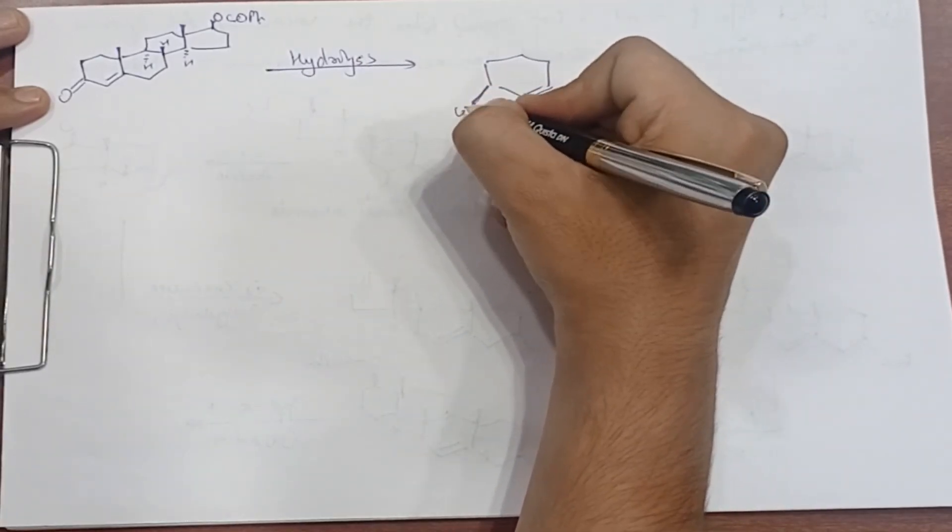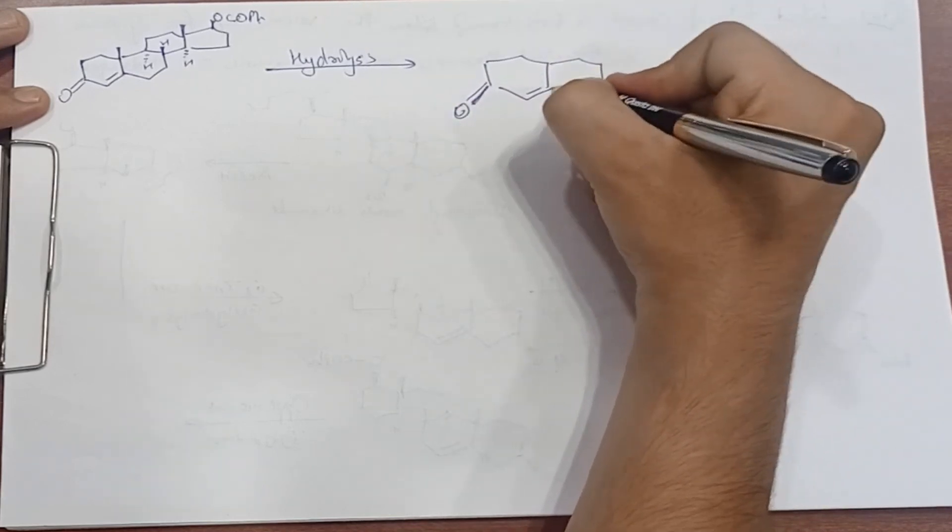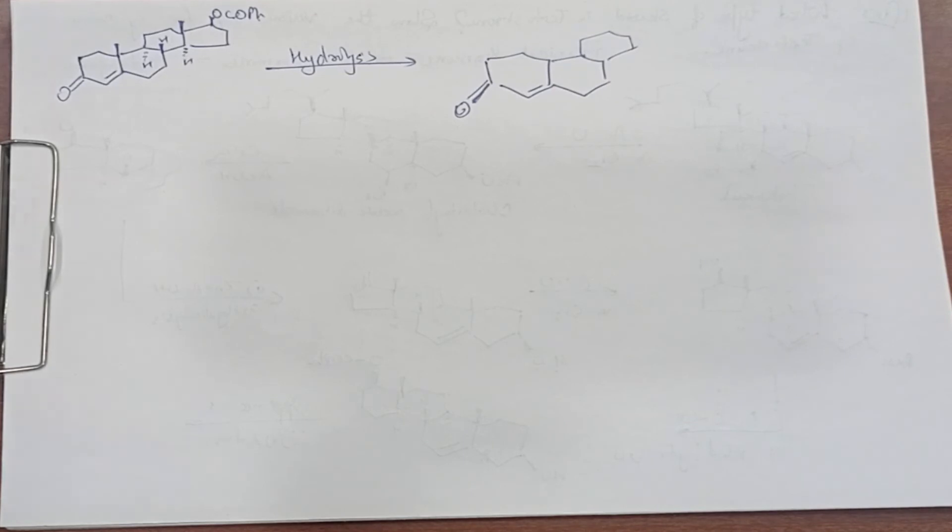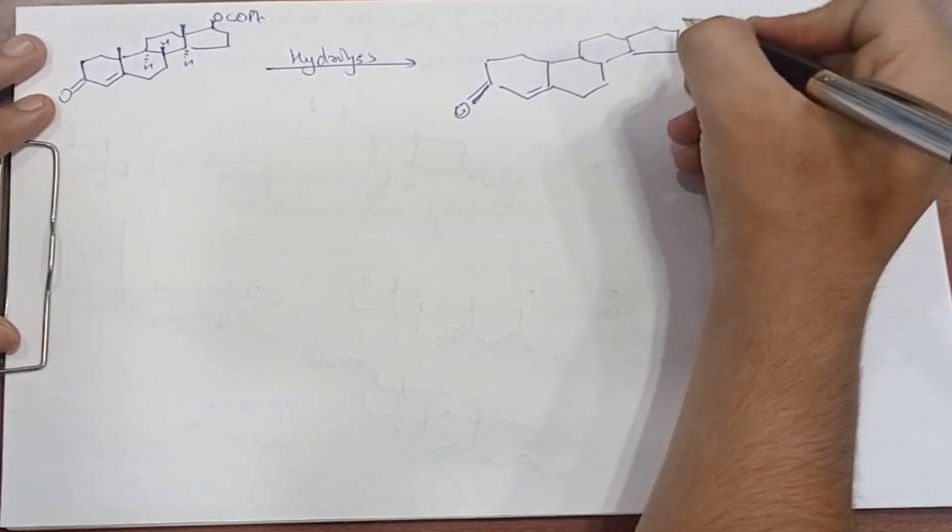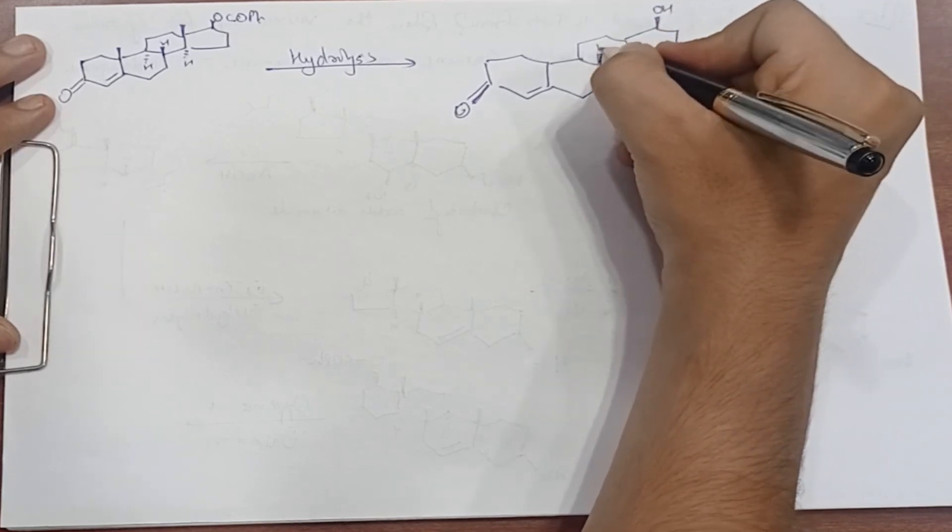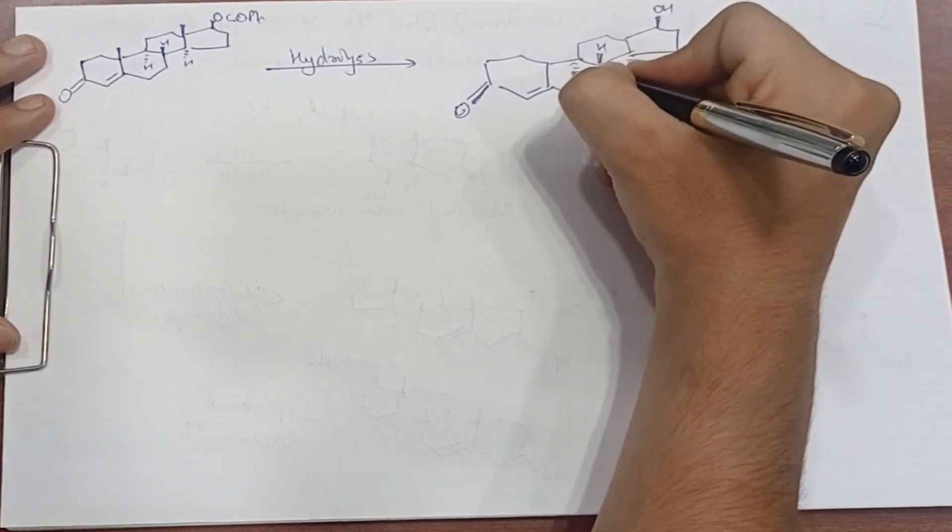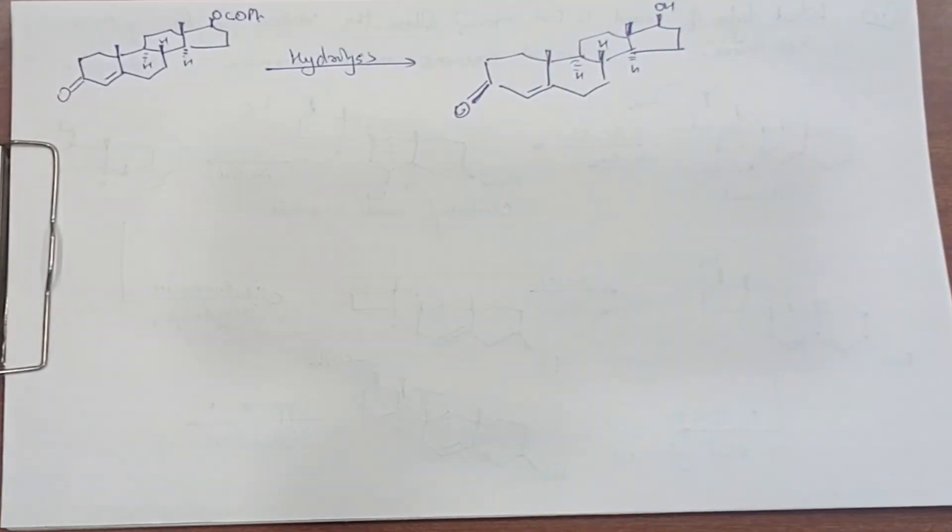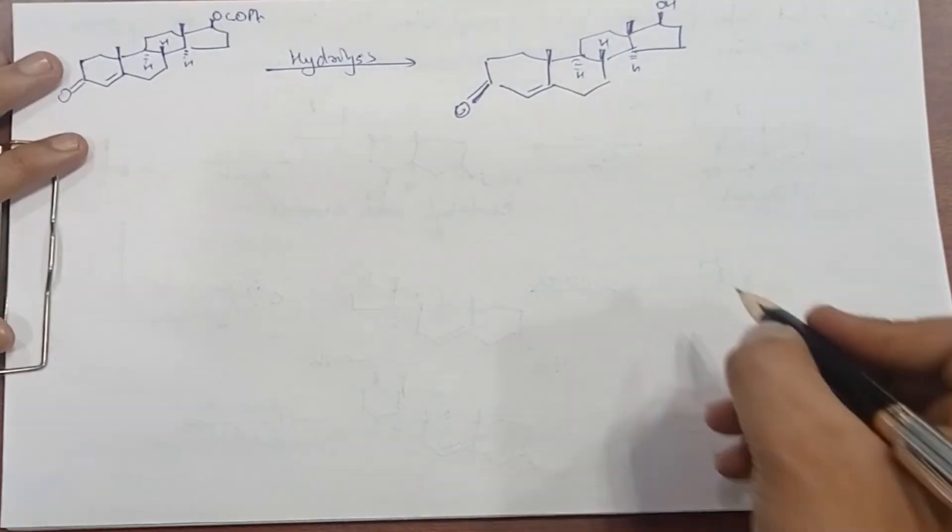Hydrolysis: the CO-Ph becomes OH. This is the starting structure of our testosterone. This is formed here with hydrogens and two angular methyl groups. This is our structure.